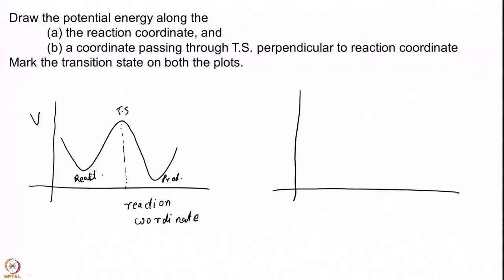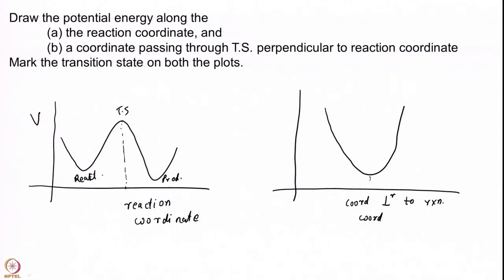What I also want you to understand from this course is that if I choose a coordinate perpendicular to the reaction coordinate at the transition state, I will get an energy surface that looks like a minimum, and this is my transition state. This is a very important concept: the transition state is a minima for any coordinate that passes perpendicular to the reaction coordinate.